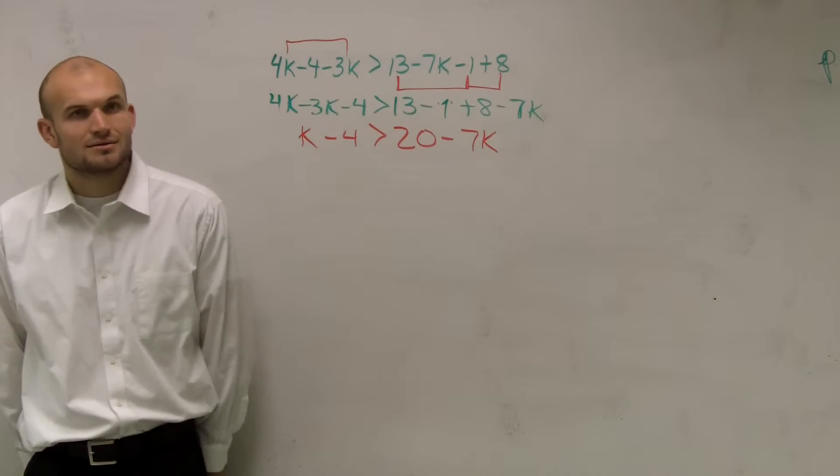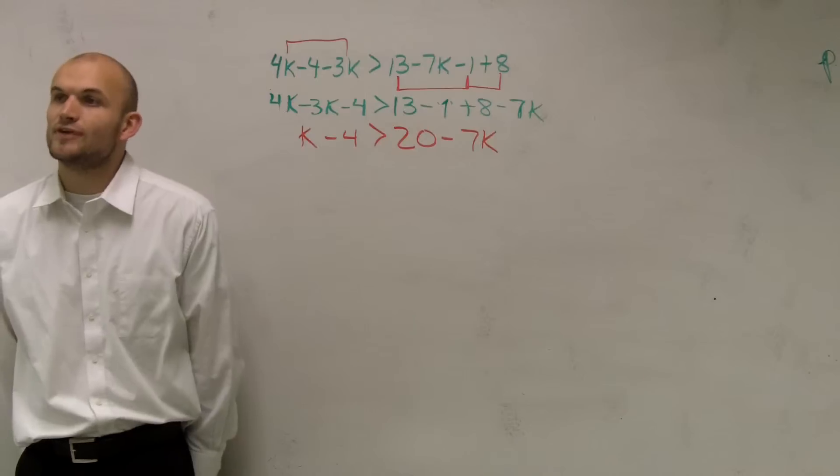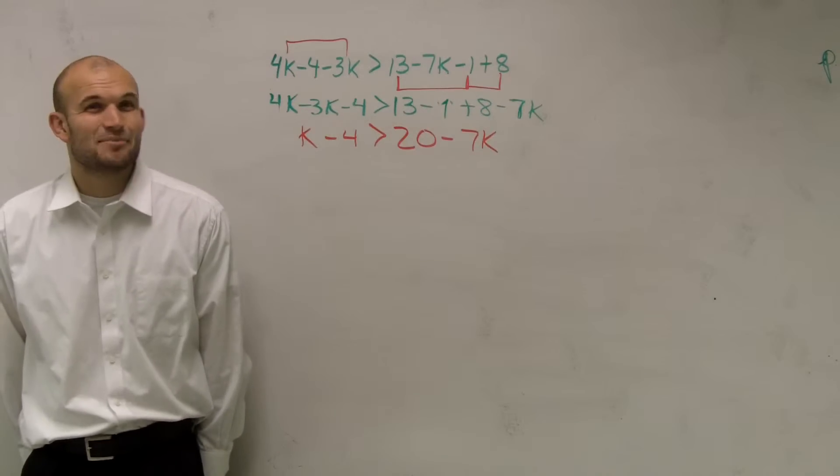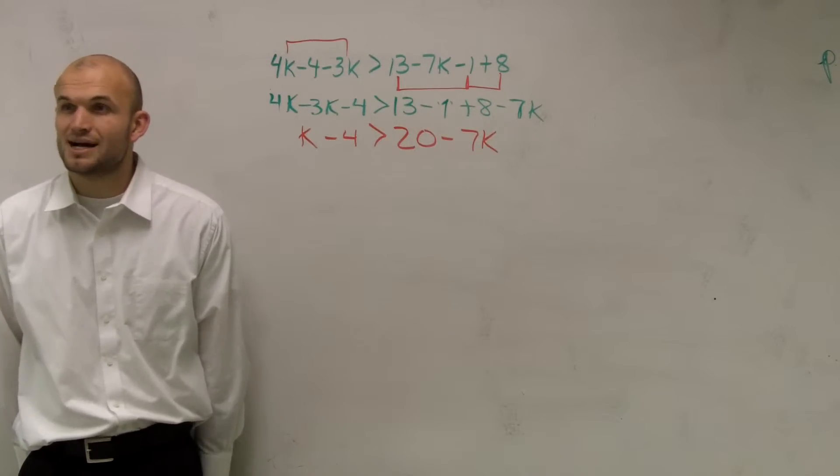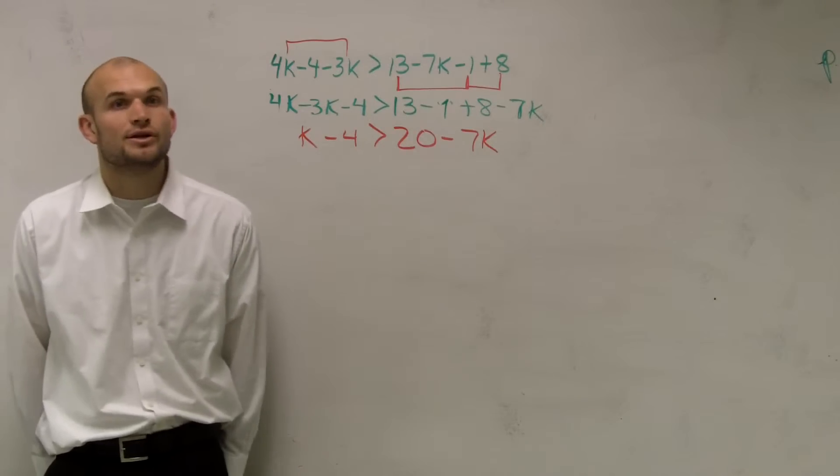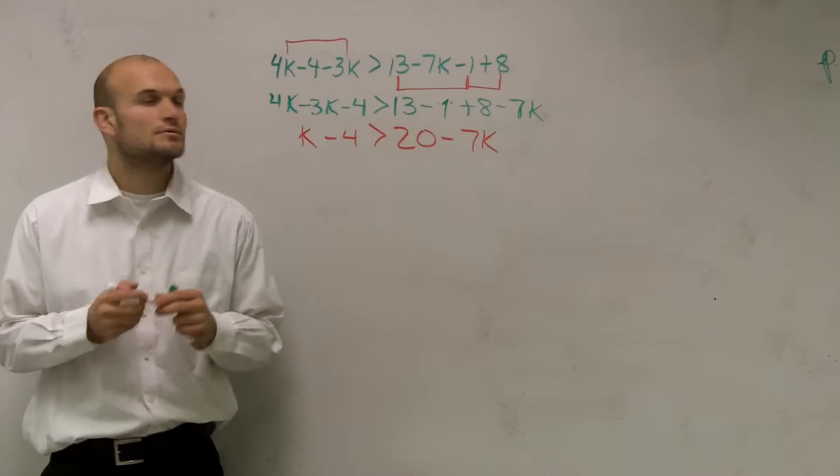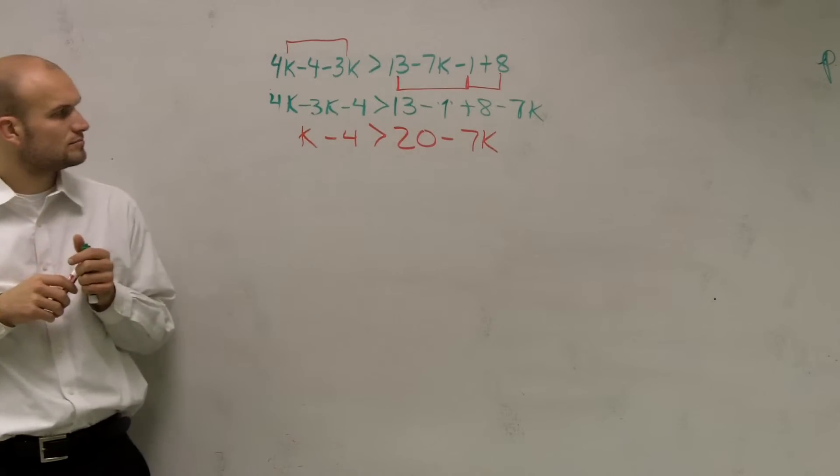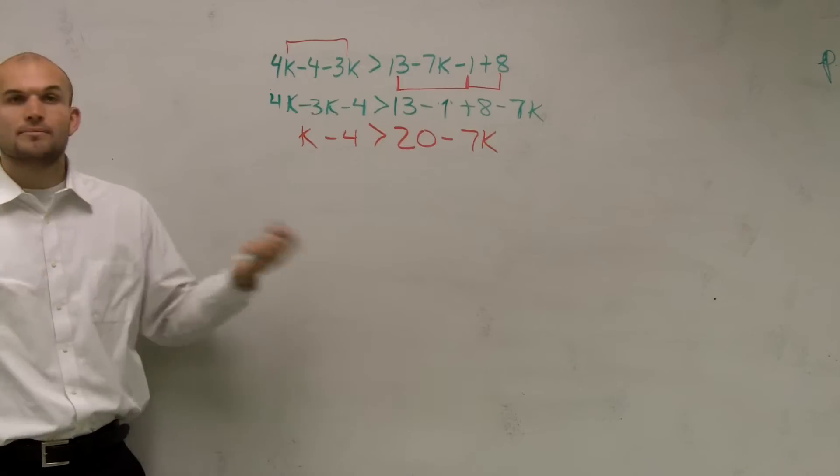Now, now we're stuck. Because guess what? We have a variable on both sides. Does anybody remember what we do when we have a variable on both sides? I like to pick on Adrian. No? Okay, yes. What do you do? You subtract the K, so, you know, to where it's not a negative number. Okay, yeah, exactly.